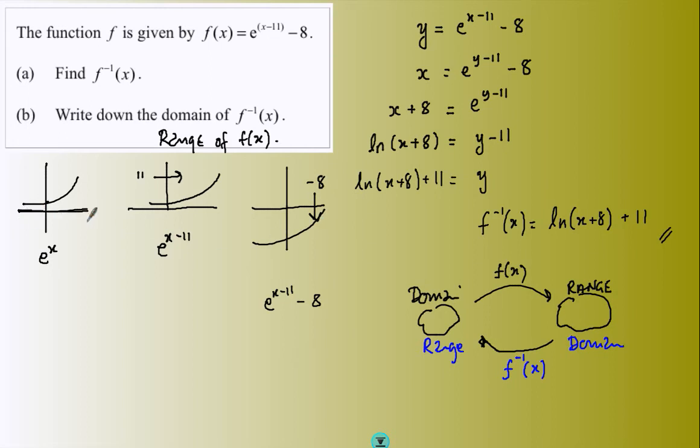And whereas the asymptote here, everything was above 0, above 0. Here now, the range, what's coming out of this function, the y values, are above negative 8.